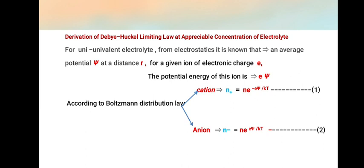K is Boltzmann constant, T is temperature, N is number of molecules per unit volume. For anion, N- = N·e^(eψ/kT).